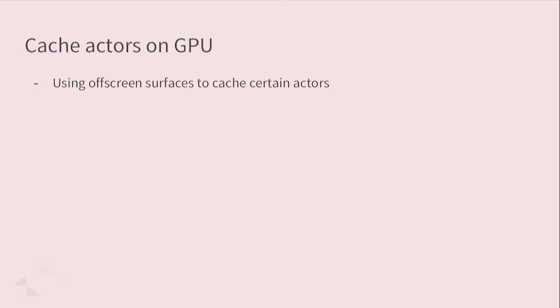There's also work from Canonical: using off-screen surfaces for actors that don't change very often. It's actually faster to render from a texture already in the GPU, and whenever the actor updates, update the texture, instead of having it repainted and pushed every time.